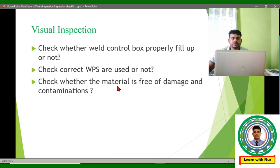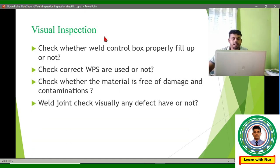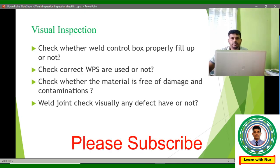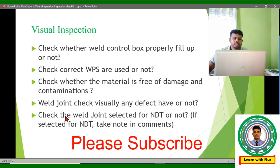Then we check that the material is free from damage and contamination — this is cross-checked again at the visual inspection stage. Next, we visually check the weld joint for any visible defects. About welding defects, I have a few lectures on my YouTube channel in the welding playlist where you can learn about the types of defects.